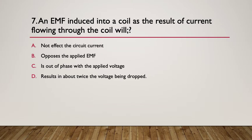Seven, an EMF induced into a coil as a result of a current flowing through the coil will do what? A, not affect the circuit current. B applies the applied EMF. C is out of phase with the applied voltage. D results in about twice the voltage being dropped. So pause here while you think about it. Here's the hint. What are the characteristics of induction and Lenz's law? So when you think about induction and Lenz's law. So it's all about opposes the EMF. An EMF induced into a coil as a result of a current through the coil, opposes the applied EMF. And that's called Lenz's law.